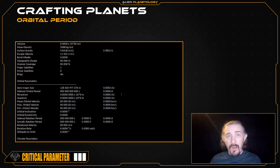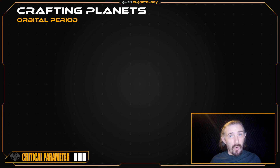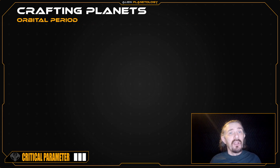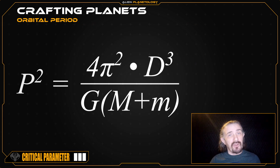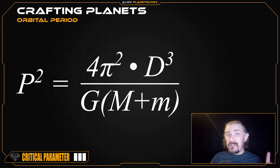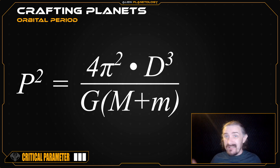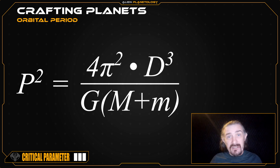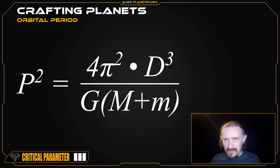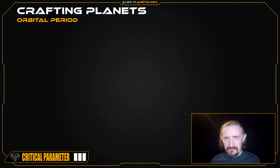Now that we know our planet's average orbital distance, we can calculate its orbital period using Kepler's third law of planetary motion. This equation looks a bit intimidating and does fill out a calculator screen, so I'm going to break it up into three simpler equations to make things a bit easier.